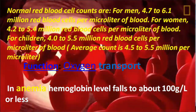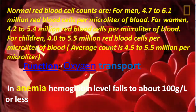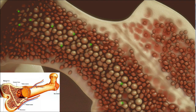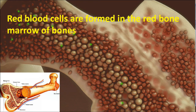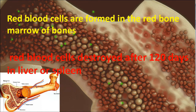The function of red blood cells is to transport oxygen to the cells and remove carbon dioxide from the cells to the lungs. Red blood cells are formed in the red bone marrow of the bones. Long bones contain a spongy tissue called bone marrow, inside which blood cells are formed. Red cells are destroyed after 120 days in the liver or spleen, or get deposited in the liver.